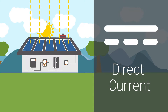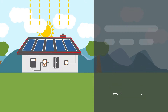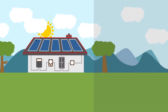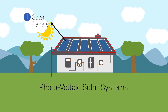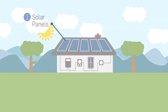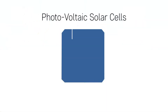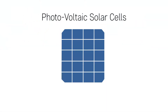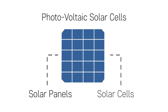The solar panels known in the industry are also called photovoltaic solar systems or photovoltaic panels. Each of those panels is comprised of photovoltaic solar cells — or you can just call them solar panels or solar cells.